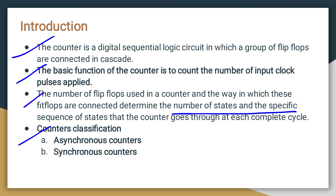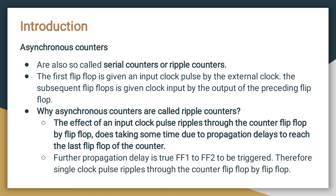The classification is asynchronous and synchronous. In the asynchronous counter, there is no clock applied to all the flip-flops — only the first flip-flop gets the input clock pulse. The remaining flip-flops do not get the input clock directly; instead, the output of the first flip-flop is used as the clock for the next flip-flop. This is also called a ripple counter because the effect of an input clock pulse ripples through the counter flip-flop by flip-flop.